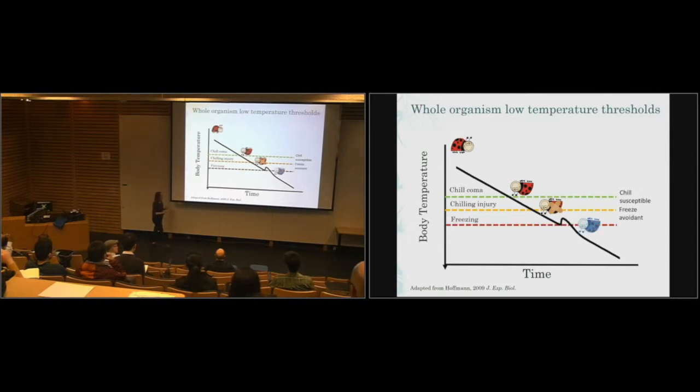Another set of species set their freezing point really low and don't worry about chilling injury, but if they freeze, they die. These are our freeze avoidant species, like my spruce budworm. And then finally we have a whole other group of species, and this is what we're going to talk about today, the ones that survive freezing, ice formation actually happening in their body.